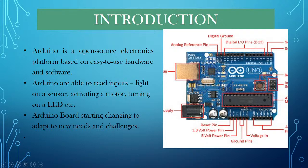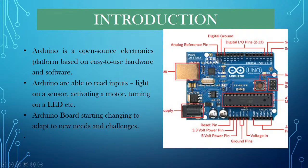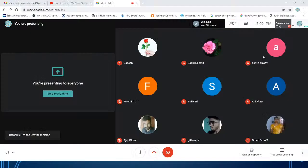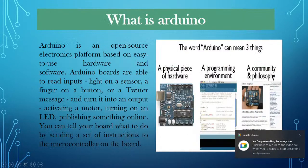GPIO means General Purpose Input/Output pins. Each pin can be set to input mode or output mode. Digital GPIO pins and analog GPIO pins are available. Analog GPIO pins allow direct connection of analog sensors. The analog reference pin provides analog reference voltage for the ADC converter to convert voltage and produce analog-to-digital output.